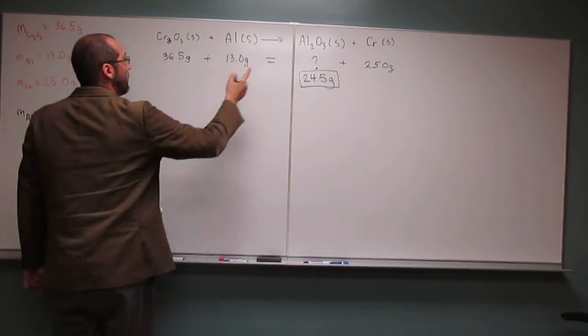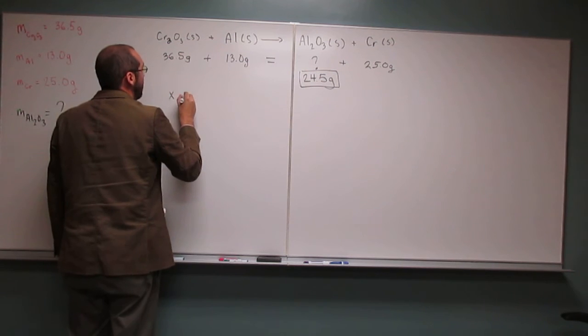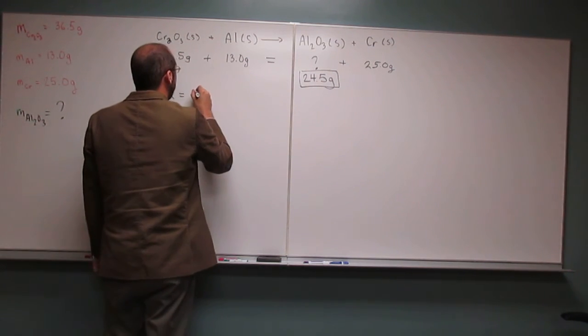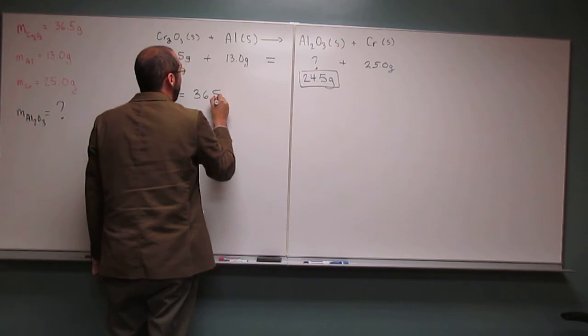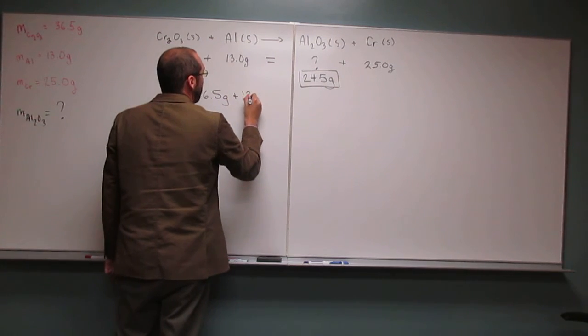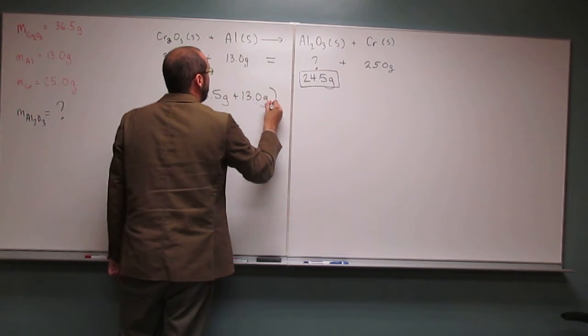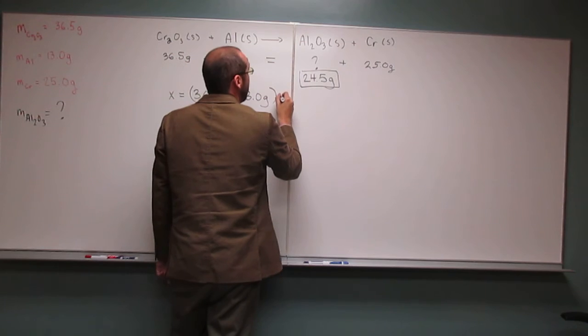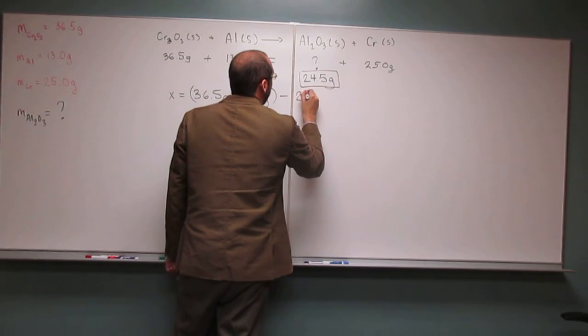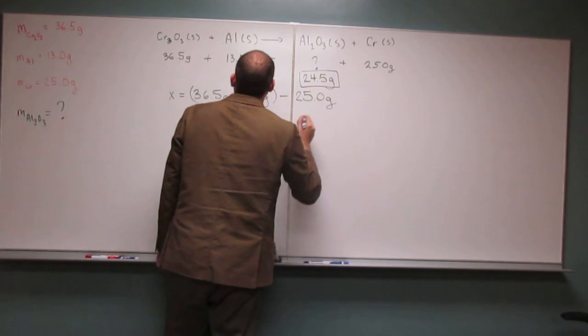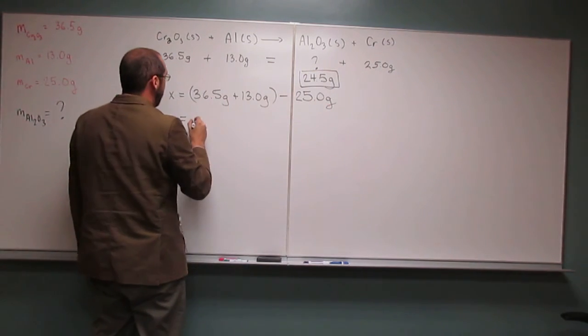And that's going to give us 24.5 grams of aluminum oxide. So what did we do to solve for X? X equals 36.5 grams plus 13.0 grams. Do that first, and then subtract 25.0 grams from that. And what did we get?